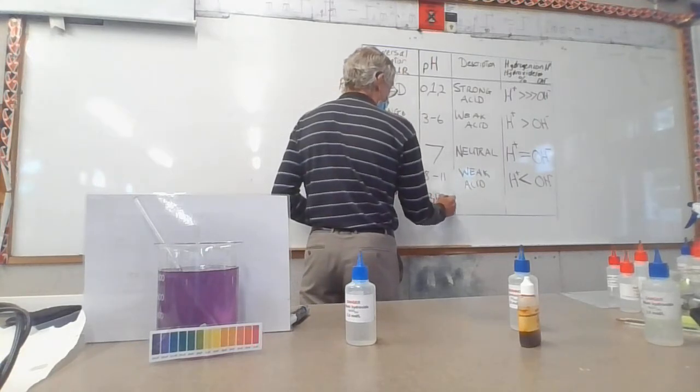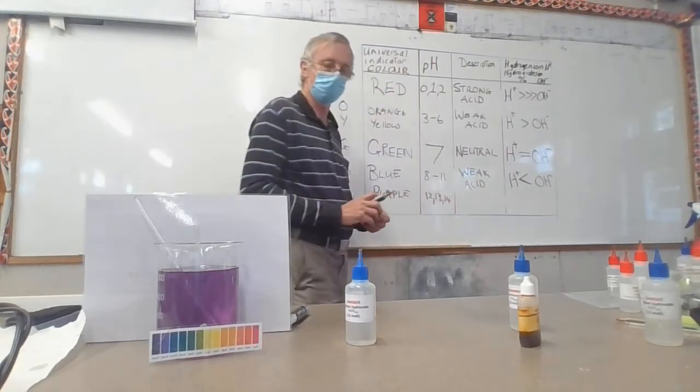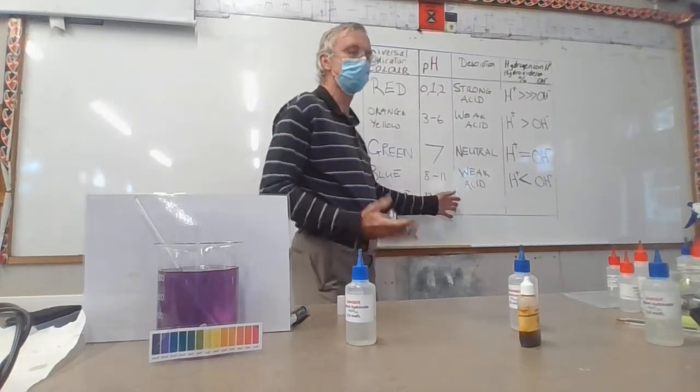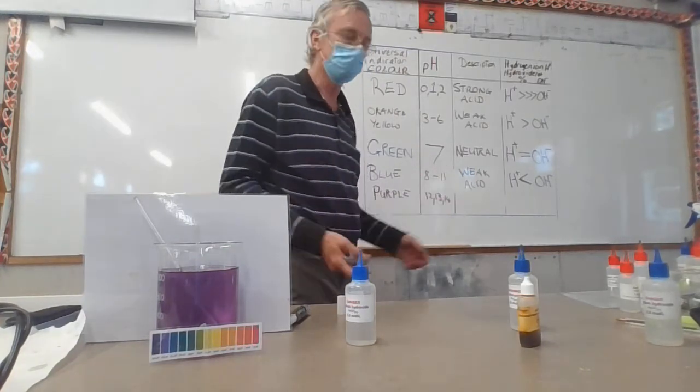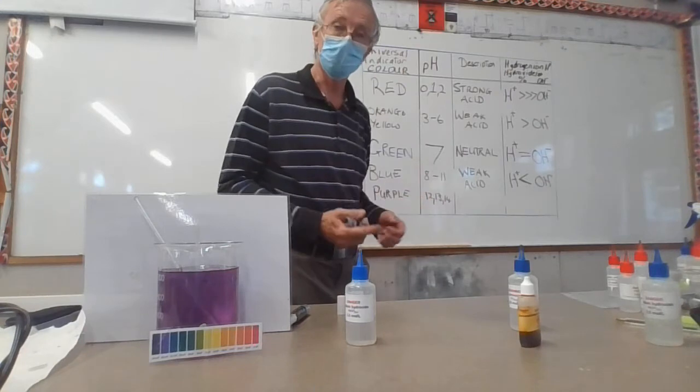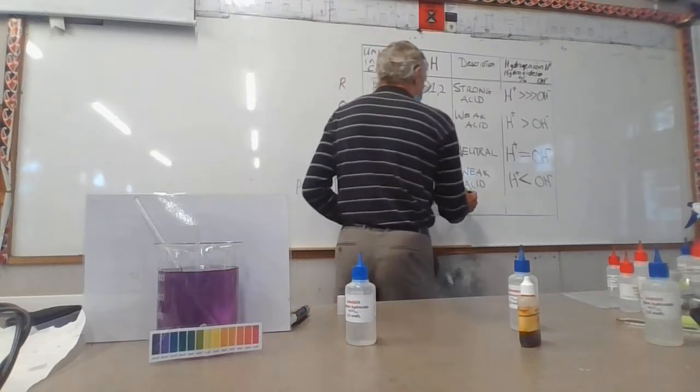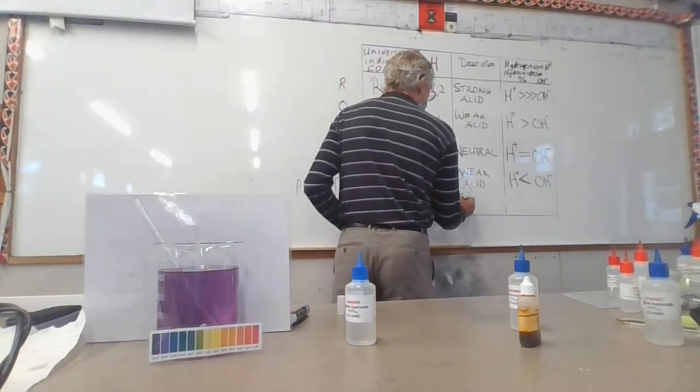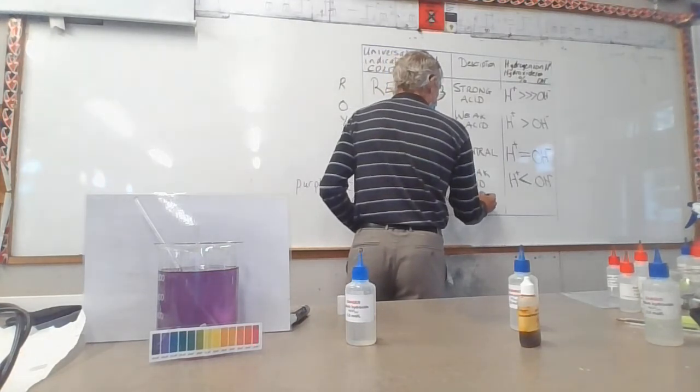If you're asked the pH of a strong base, just go straight to the end of the scale: 14, very strong base like Drano or oven cleaner. And here the description becomes strong base.